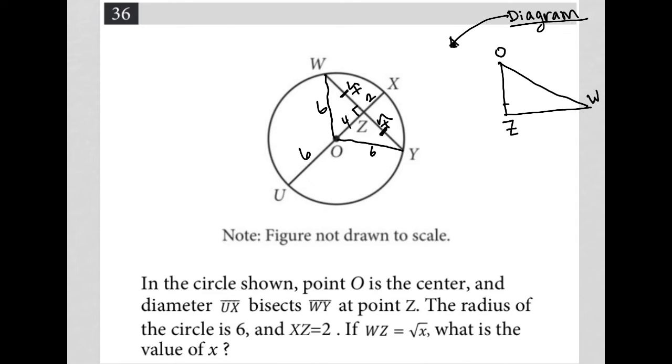then I know that this is a right angle. I know that this OZ is 4, and I would also know that Z to W is square root X. And I would know O to W is 6, because that's the radius.